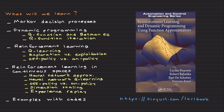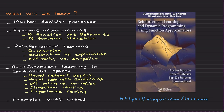Throughout this course we will first cover Markov Decision Processes, which are the theoretical foundation of reinforcement learning, discussed more in the next lectures. Then we will learn dynamic programming, where we assume the environment is known — a model-based approach. We will optimize the agent's behavior with respect to known environments and learn the Q-function and the Bellman equation.